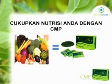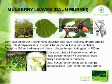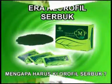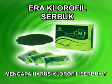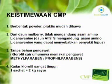Cukupkanlah nutrisi Anda dengan CMP, yaitu klorofil dalam bentuk serbuk, yang berasal dari daun murbei yang dikonsumsi oleh ulat sutra untuk menghasilkan benang sutra. Keistimewaan CMP: pertama, bentuknya sebagai powder, praktis mudah dibawa, dan berasal dari daun mulberry yang tidak mengandung asam amino kanavanin, di mana daun alfalfa yang biasa digunakan mengandung asam amino L-kanavanin yang dapat menyebabkan penyakit lupus.